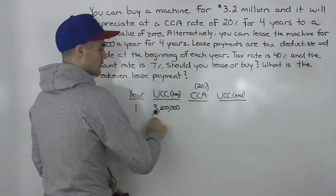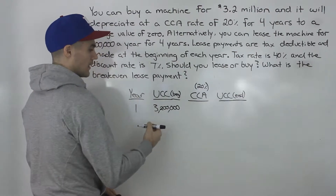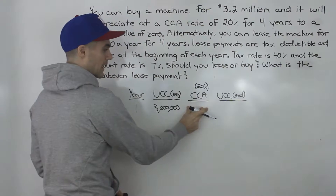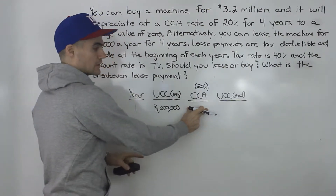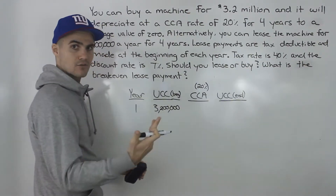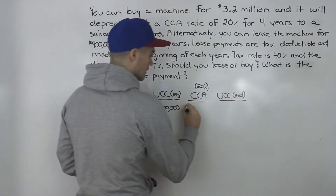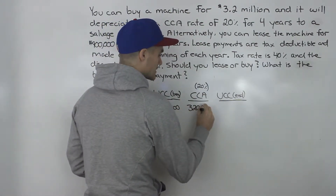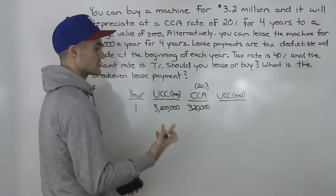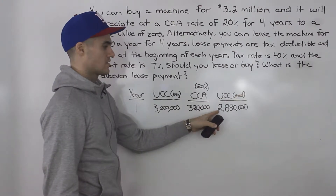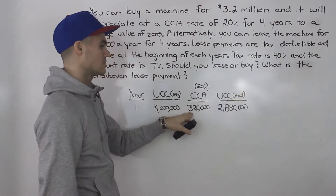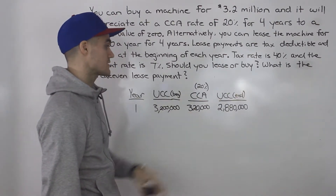In year one, the UCC at the beginning of the year is the capital expenditure — $3.2 million. The CCA rate is 20%, so 3.2 million multiplied by 0.2 gives 640,000. However, in the first year, you're only allowed to take half of that full CCA — so 640,000 divided by 2 gives 320,000. That's the depreciation allowed in year one, leaving a UCC at the end of the year of 2,880,000.